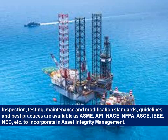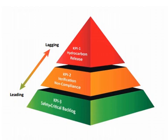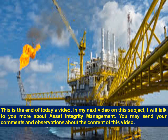Asset integrity management achievement can be measured by using industry key performance indicators (KPIs). Setting KPIs to measure asset integrity management system performance could include: dangerous occurrence, very high potential incident, lost time injury, major injury, hydrocarbon release, failure of safety critical elements (SCE), safety critical maintenance backlog, and overdue inspection. A typical KPI pyramid is shown here. This is the end of today's video.